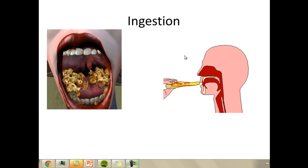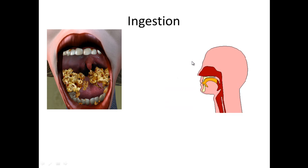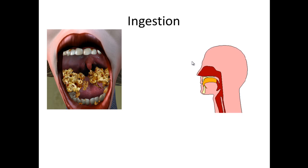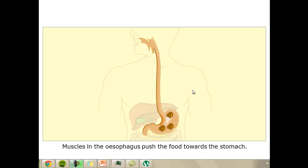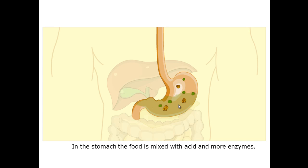We also have saliva within our mouths and that helps to break down particular types of food, namely carbohydrates. As the food is pushed down the esophagus through peristalsis it reaches the stomach, which is basically a muscular bag containing acid and enzymes which break down that food further.